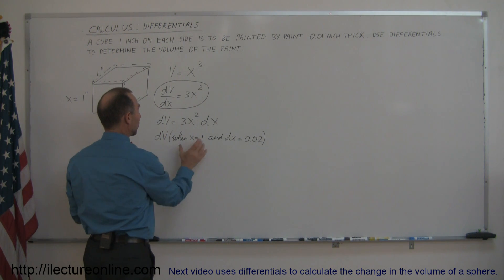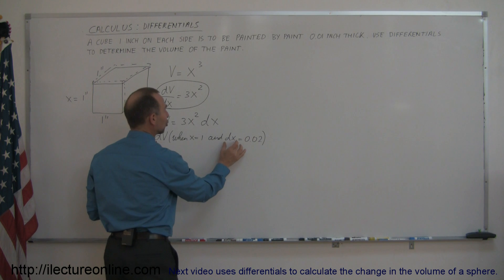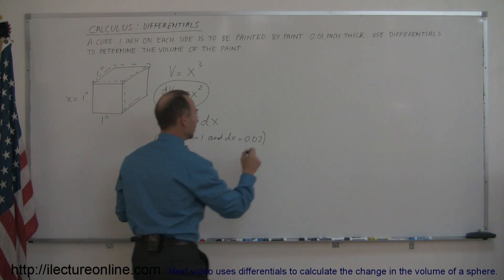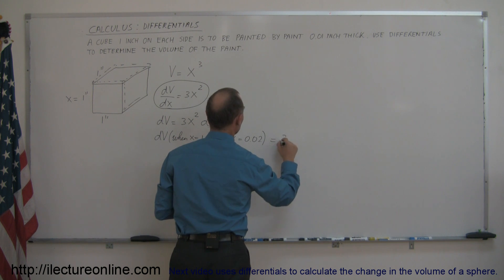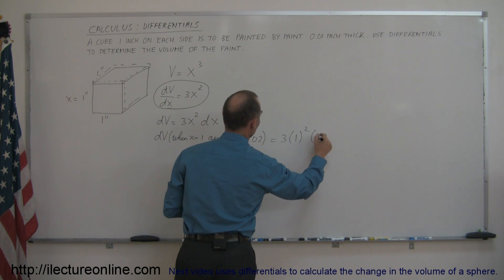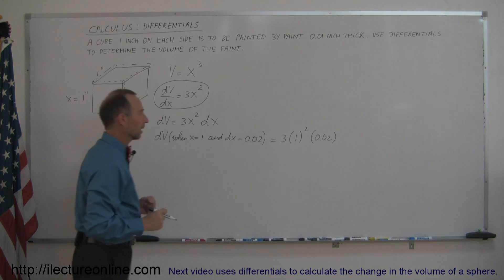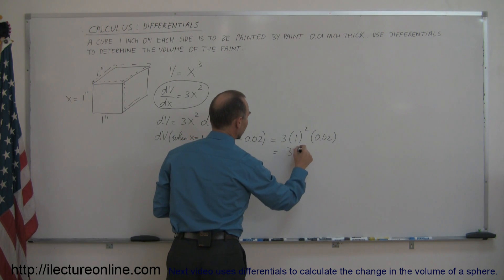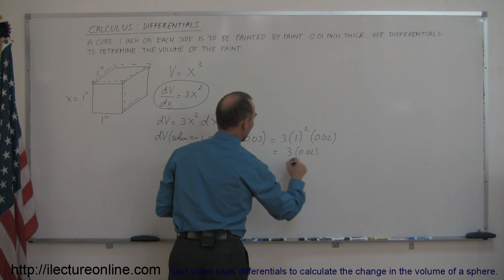So when the dV changes at the point when x is equal to 1, and I change x by as much as 0.02, because it's on both sides of the cube, that should then equal to 3 times 1 squared times dx, which is 0.02. If I work that out now, this is equal to 3 times 1 or 3 times 0.02, or this is equal to 0.06.